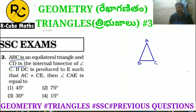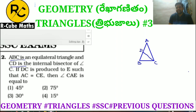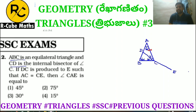Since ABC is an equilateral triangle, each angle is 60 degrees. The internal bisector bisects the 60-degree angle, giving us 30 degrees each side. DC is produced to E, and we are given that AC is equal to CE. So we join point A to E.